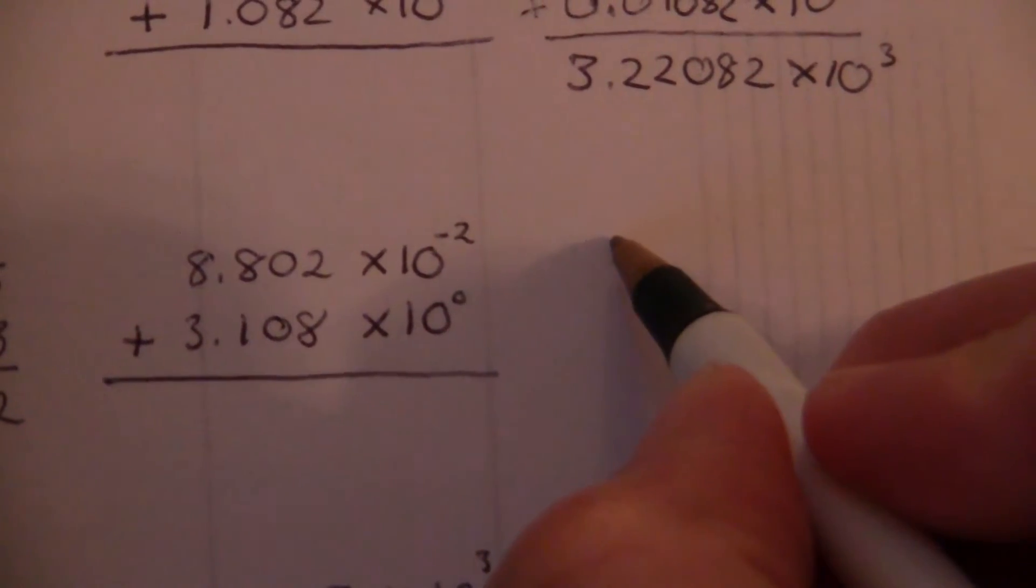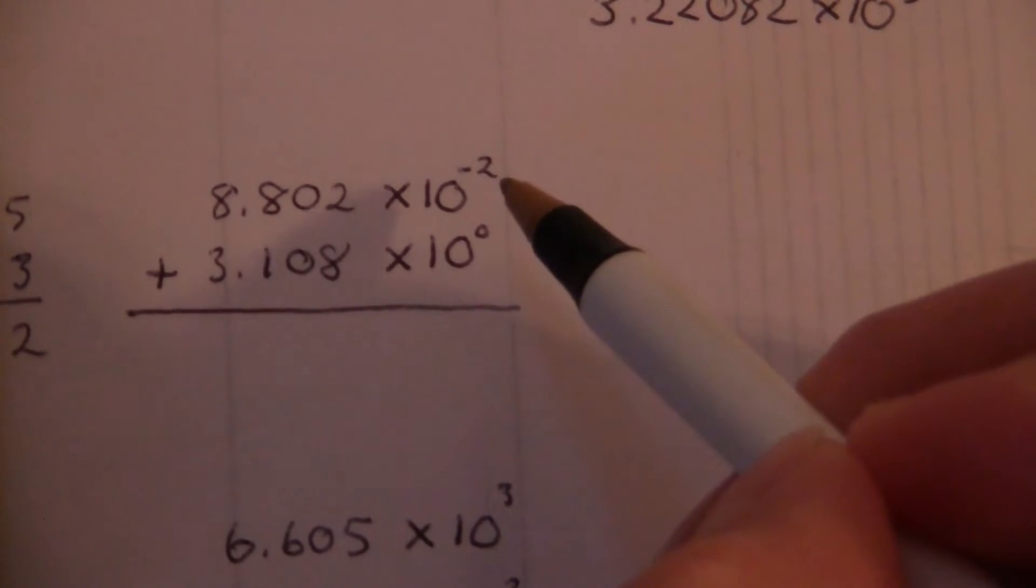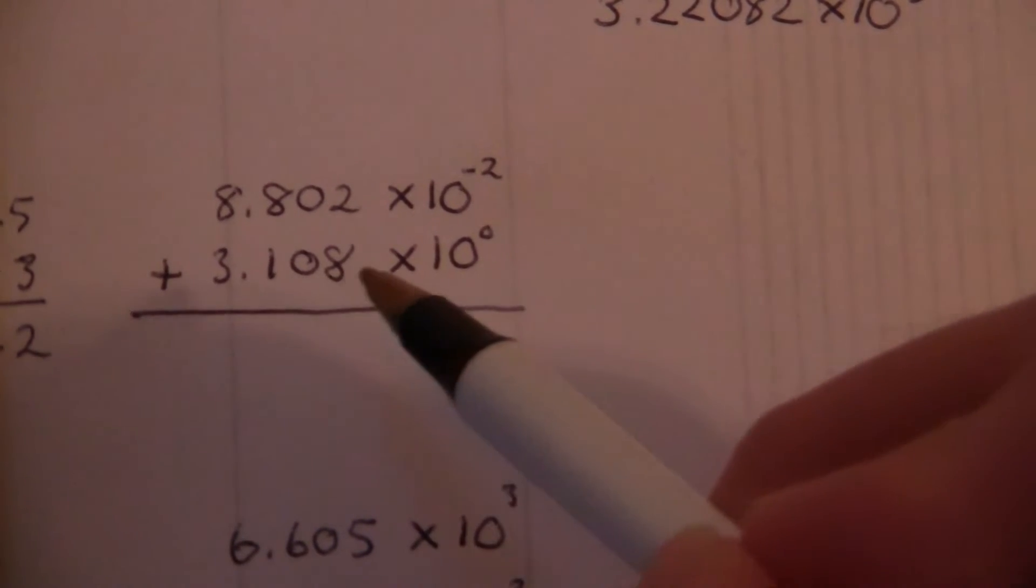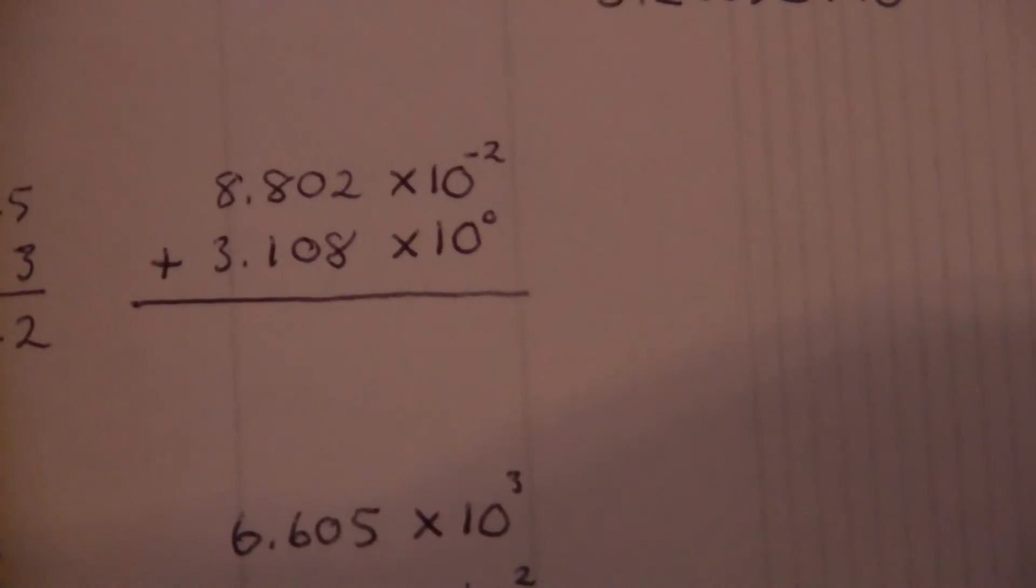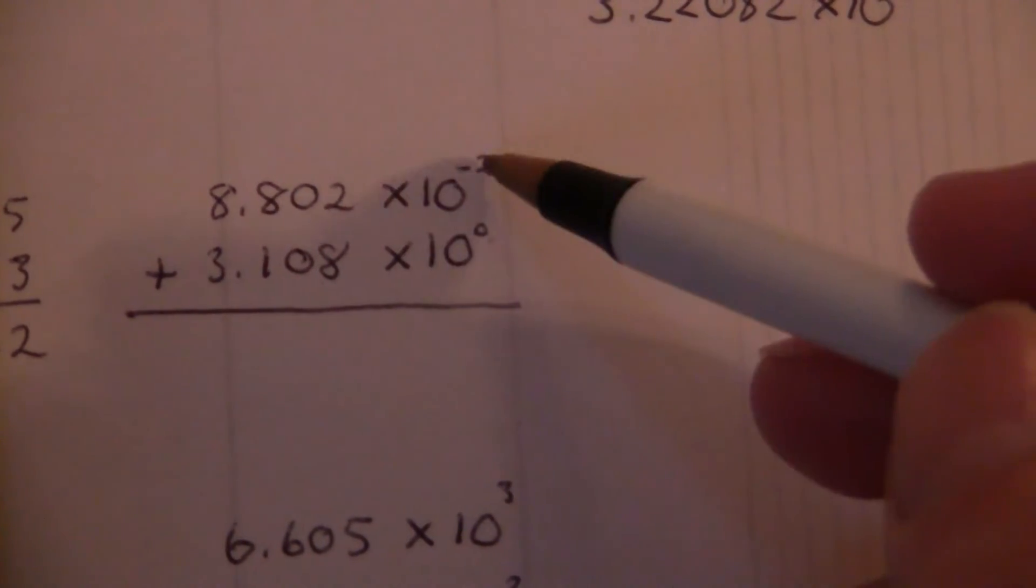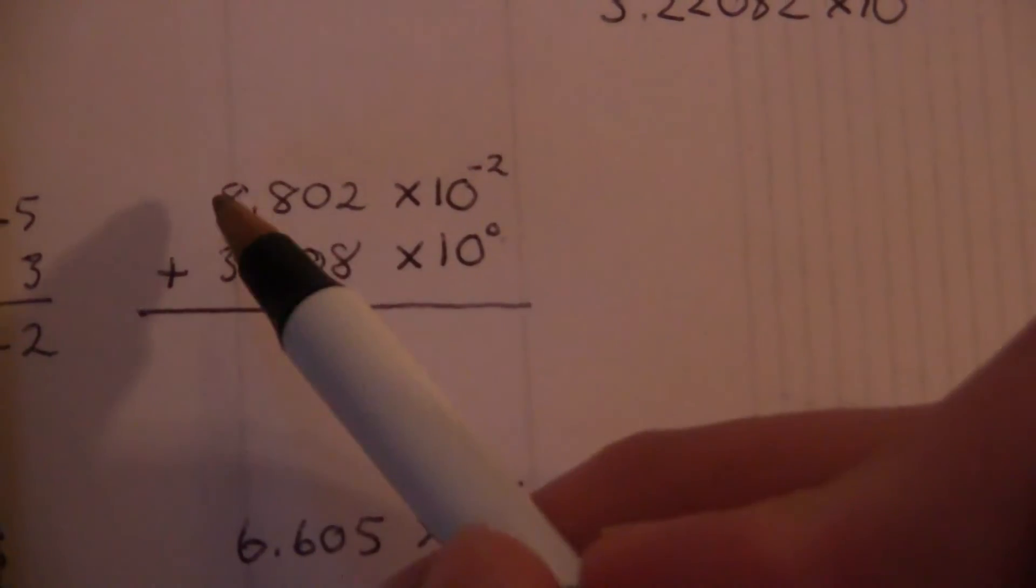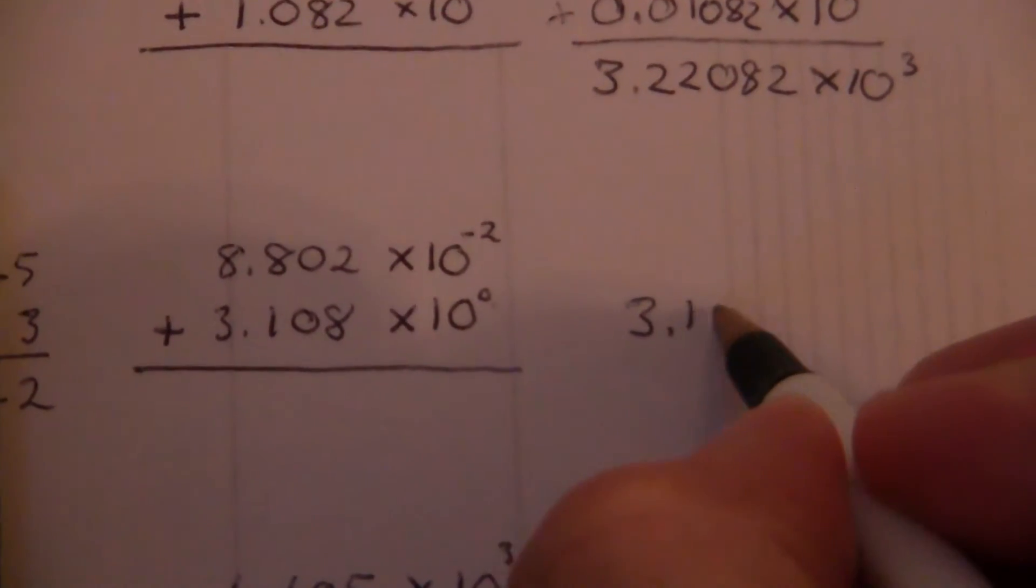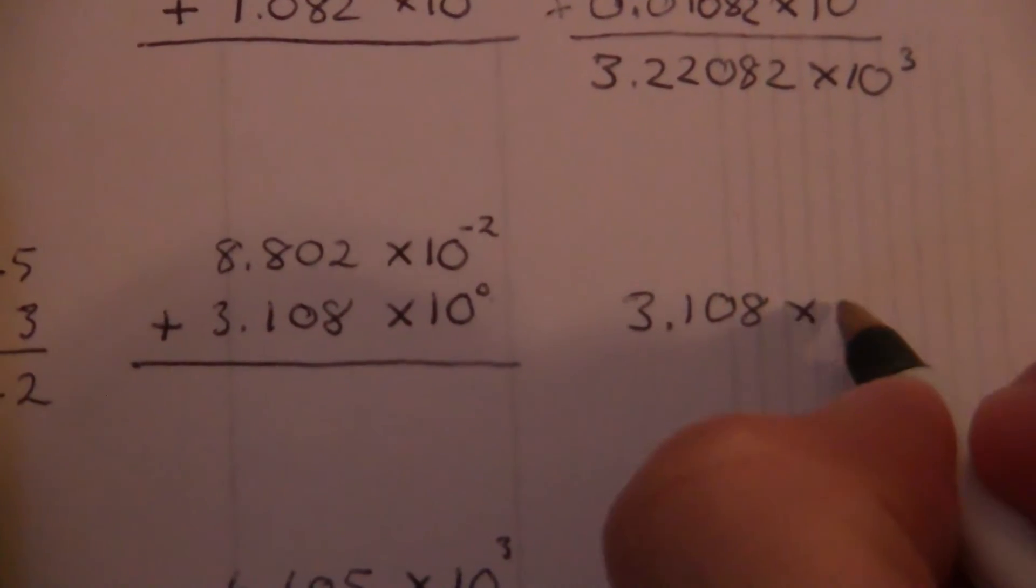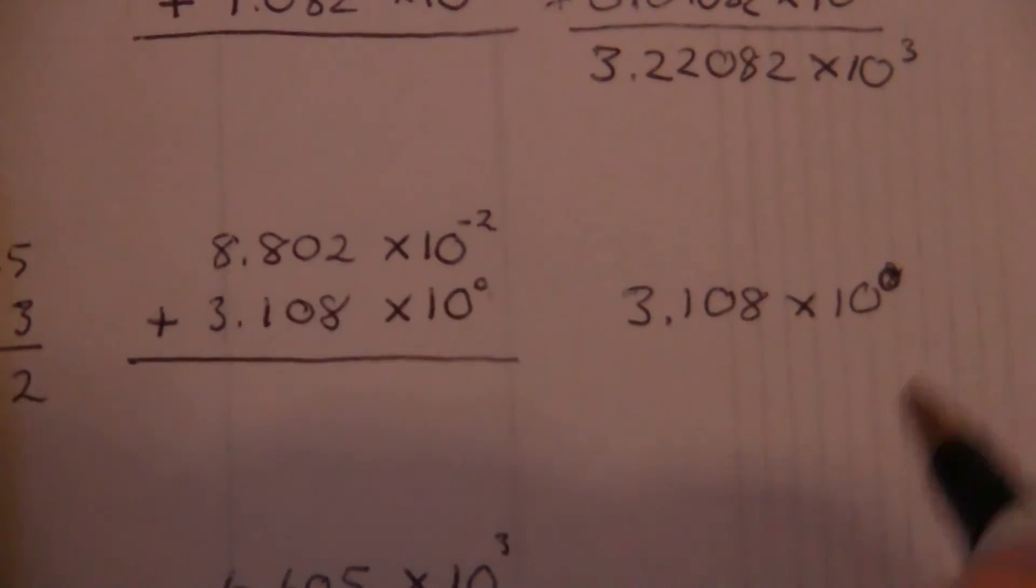We have 8.802 times 10 to the negative 2, plus 3.108 times 10 to the 0. So this time, which one is higher? The 0. So we're going to convert both of those, or rather convert this one to the 0. And we can go ahead and write this one down, since that one is not going to change. Times 10 to the 0.